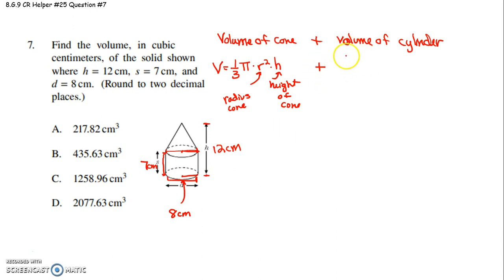Plus, and then the volume of your cylinder is pi r squared h. And that will be the height of the cylinder. And r will be the radius of the cylinder.